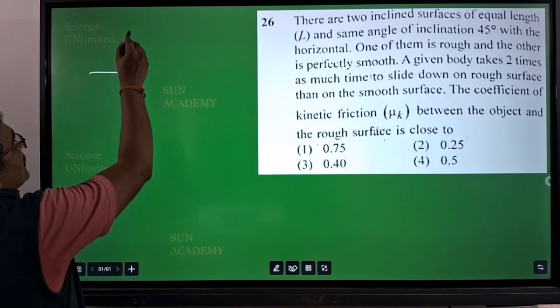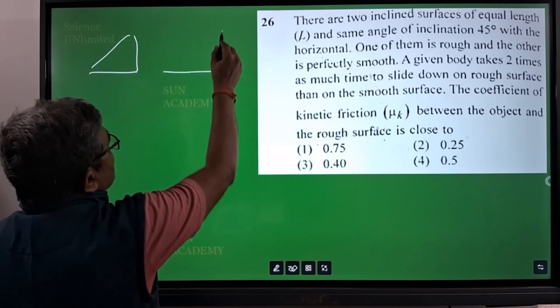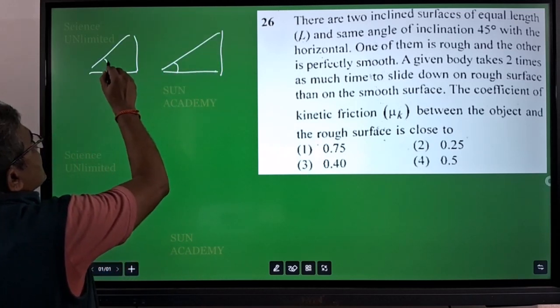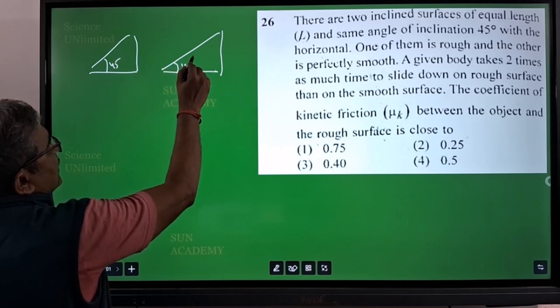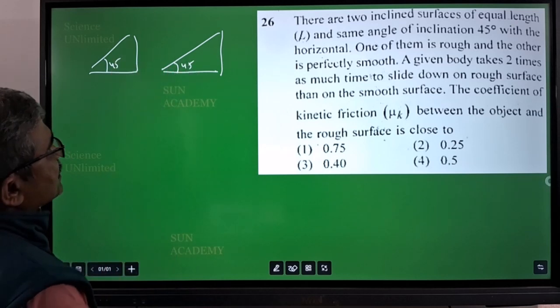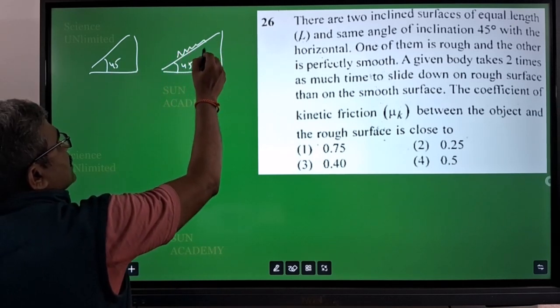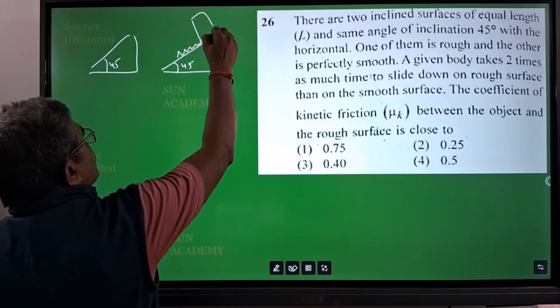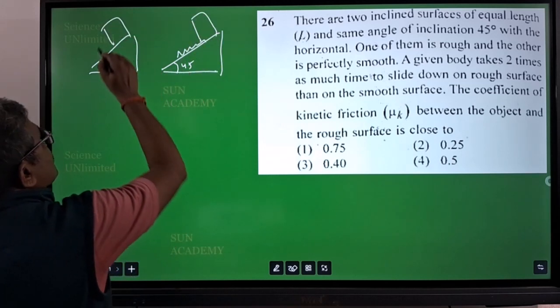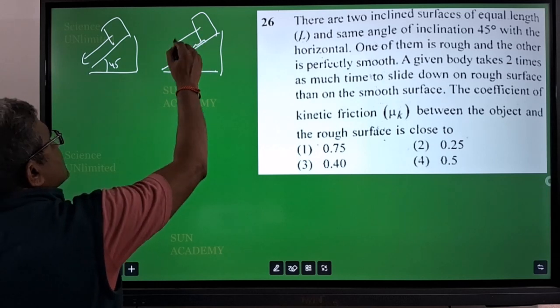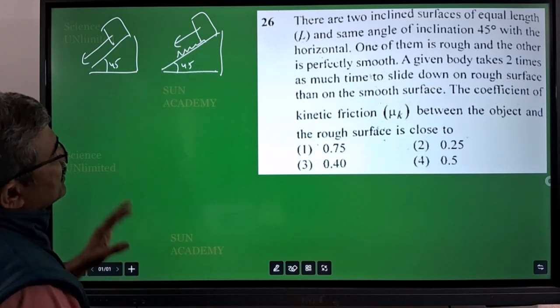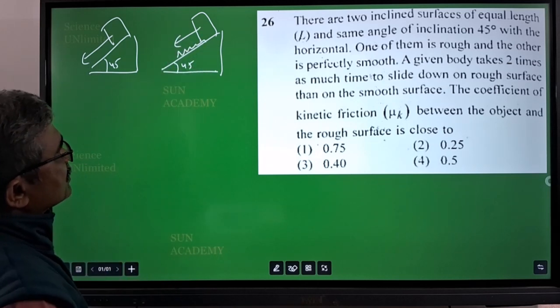Two inclined surfaces are there. This also seems to be having heavy calculations, so it will eat your time. Two inclined surfaces are there, one is rough so it has some friction. If you put a block there, this block will come fastly, but this block will not come fastly because of the roughness, because of the frictional force which is opposing.